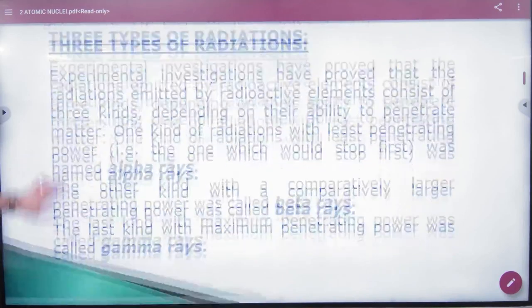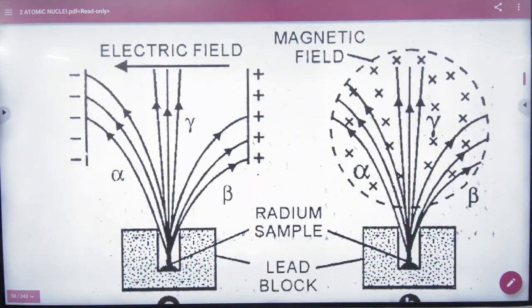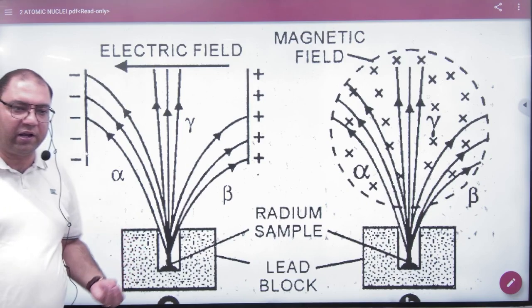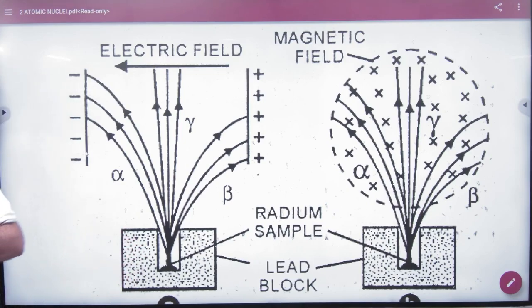In radioactivity, there are three types of radiation: alpha, beta, and gamma. In alpha decay, when a big nucleus breaks, an alpha particle is produced.